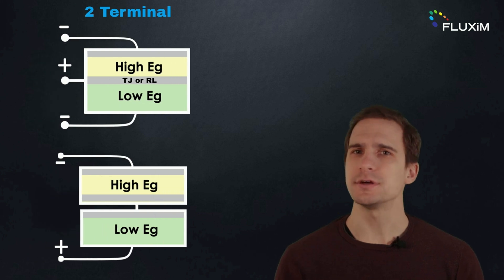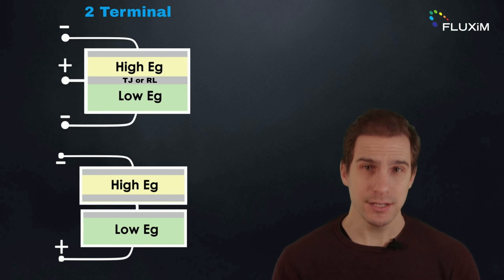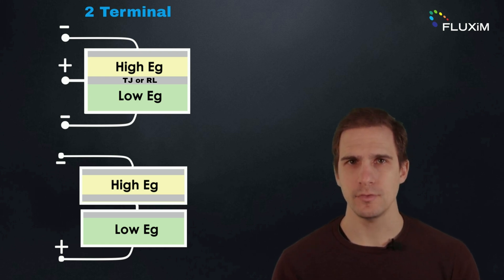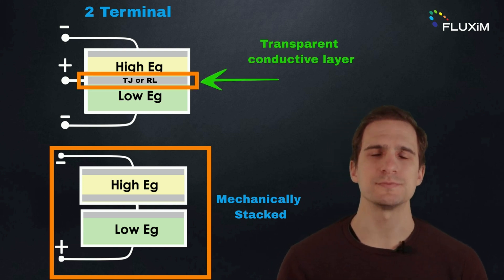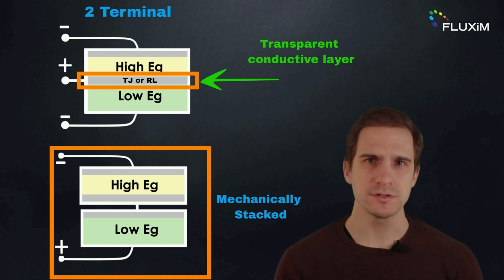In two-terminal tandem solar cells, the subcells are electrically connected and must be current-matched to avoid recombination losses. This configuration is obtained by stacking the subcells mechanically or through a single transparent and conductive layer, also known as tunnel junction or recombination layer, which is essential to form atomic contact between the subcells.